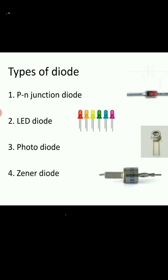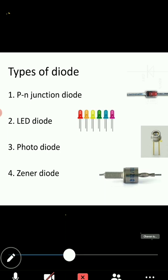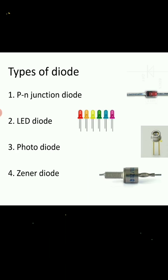After that, the Zener diode. If you see the construction diagram for the Zener diode and the PN junction diode, both are the same. But if you see its working principle, for the forward biasing of PN junction and Zener diode, both are the same. But the reverse biasing of PN junction and Zener diode are different.